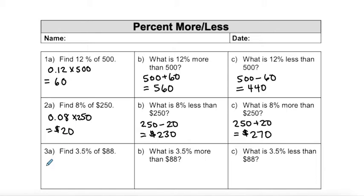I'm going to do the same strategy for example number three. This time I'm finding 3.5% of $88. So I first start by converting my percentage into a decimal number, so divide by 100 or move that decimal place two spots to the left. So 0.035 and I'm multiplying that by 88 to give me $3.08.